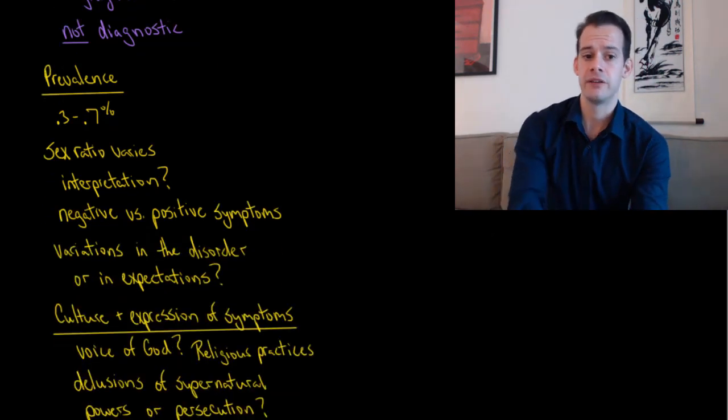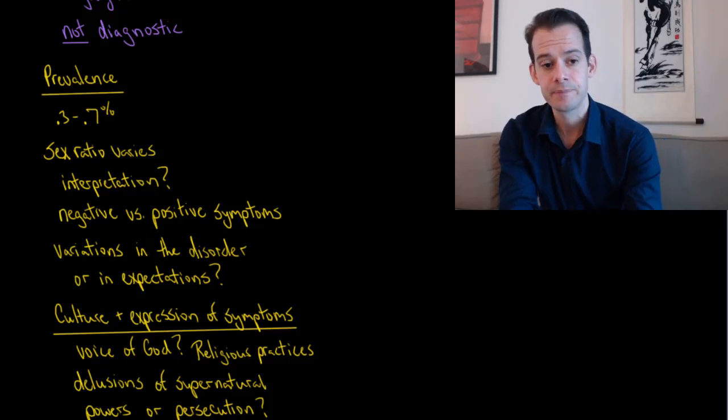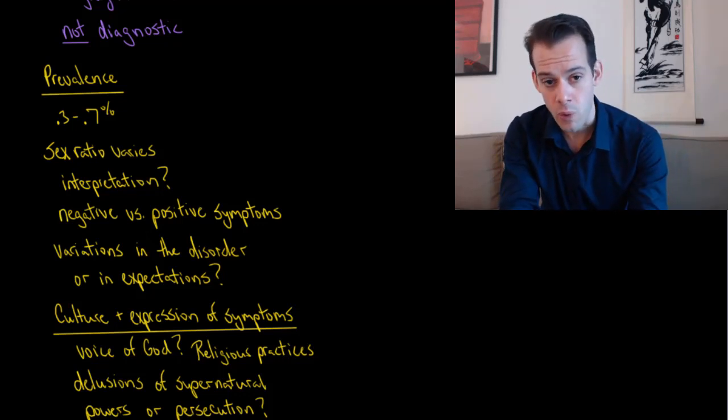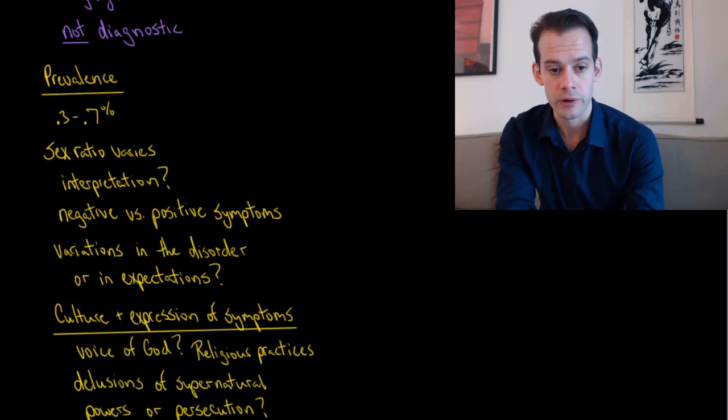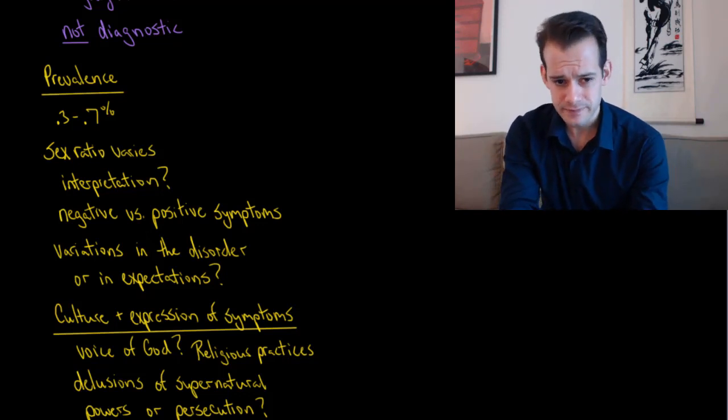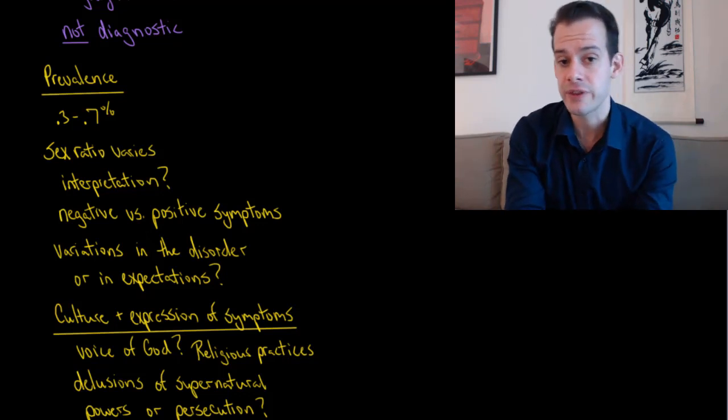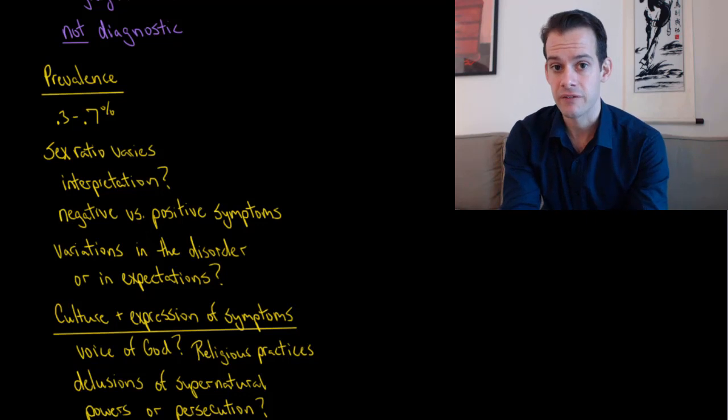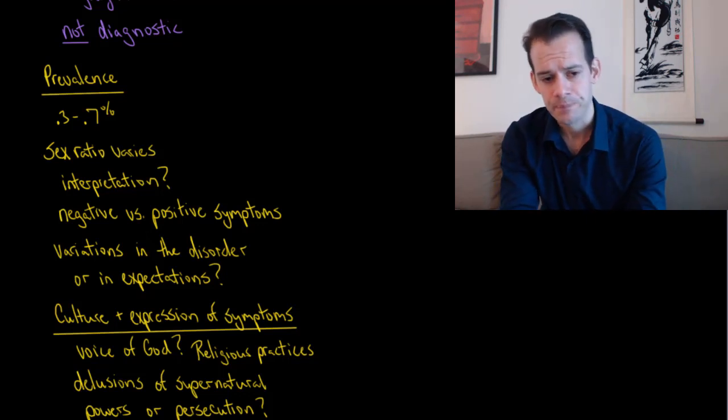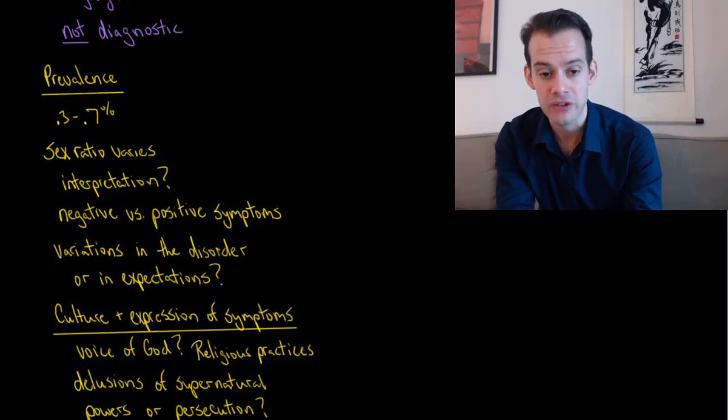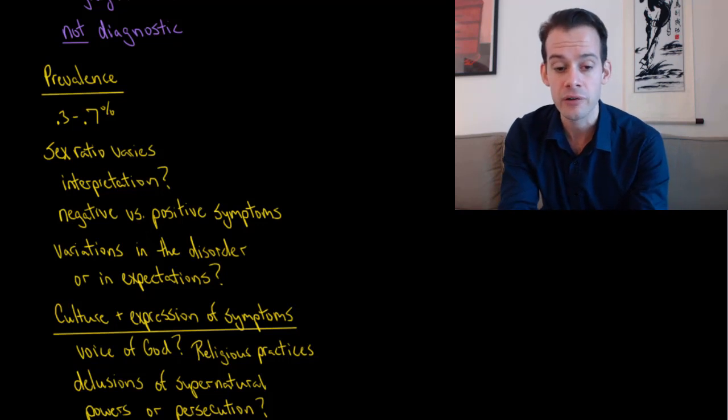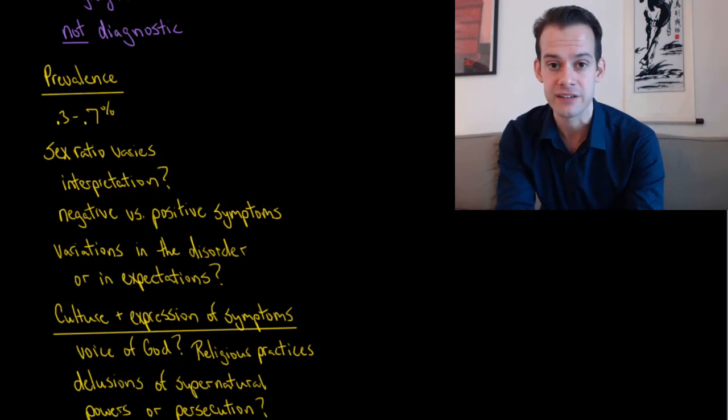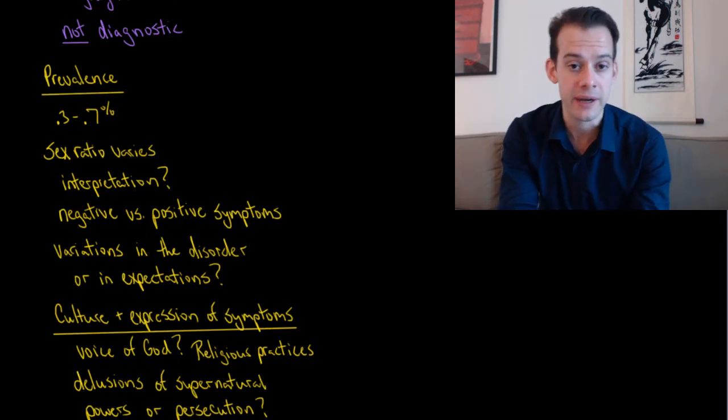The prevalence for schizophrenia is estimated to be about 0.3 to 0.7% in the DSM-5. This is quite low, it's a fairly rare disorder. We see variation in the sex ratio. In some cases suggesting that males are more likely to be diagnosed with schizophrenia than females. But part of this relates to the interpretation of symptoms. Males are more likely to show the negative symptoms of schizophrenia rather than the positive symptoms. We might think about different expression of the same disorder. We might wonder whether there are differences between males and females in the expression, or if there's underlying differences in the disorder, whether there's variations of different types of schizophrenia.